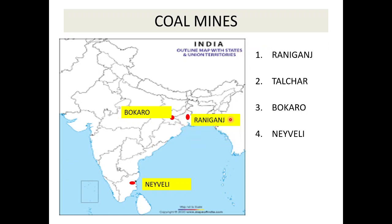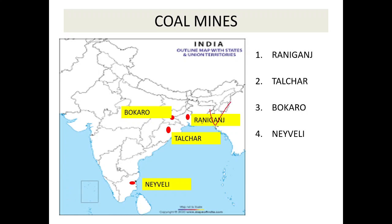The four important coal mines are: 1. Jharia, 2. Talcher - Odisha, Raniganj - West Bengal, 3. Bokaro, 4. Neyveli - Tamil Nadu. So: Raniganj - West Bengal, Talcher - Odisha, Bokaro, and Neyveli - Tamil Nadu.